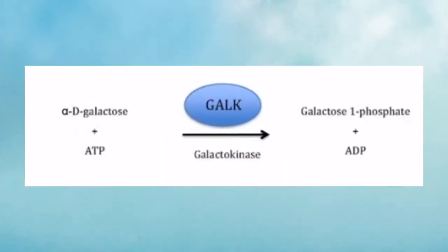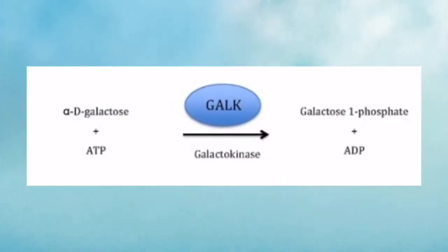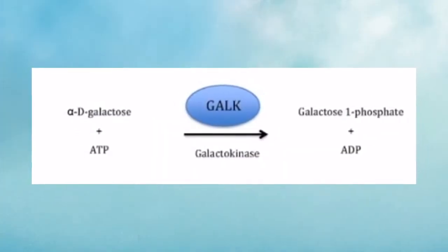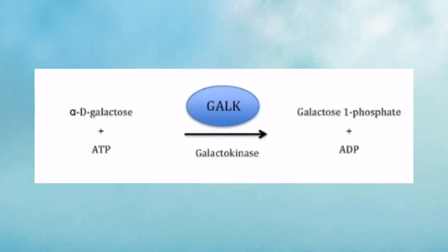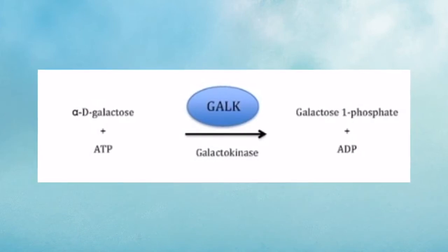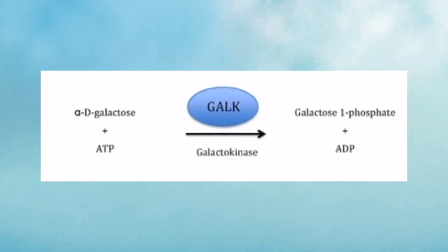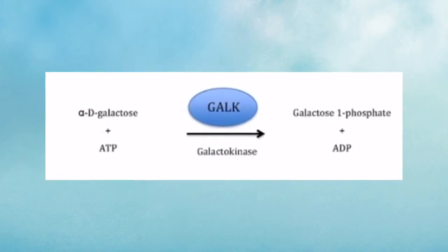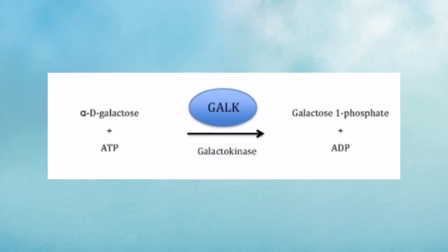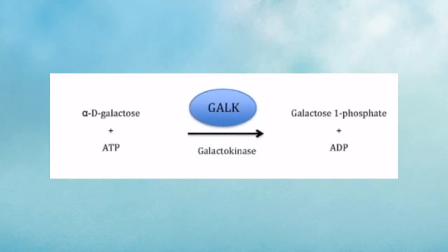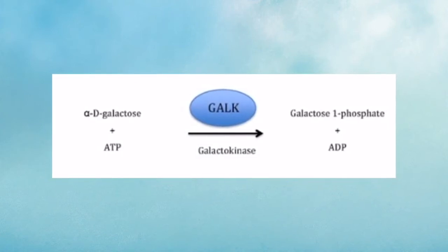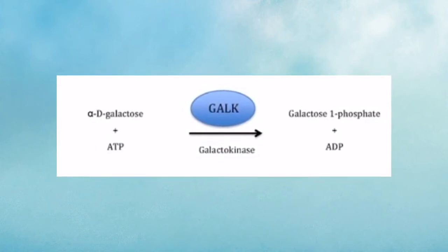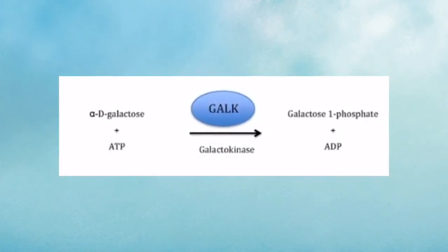The first reaction is the conversion of galactose to galactose-1-phosphate. Galactose is phosphorylated by the enzyme galactokinase at the expense of one molecule of ATP, thereby producing galactose-1-phosphate and a molecule of ADP.